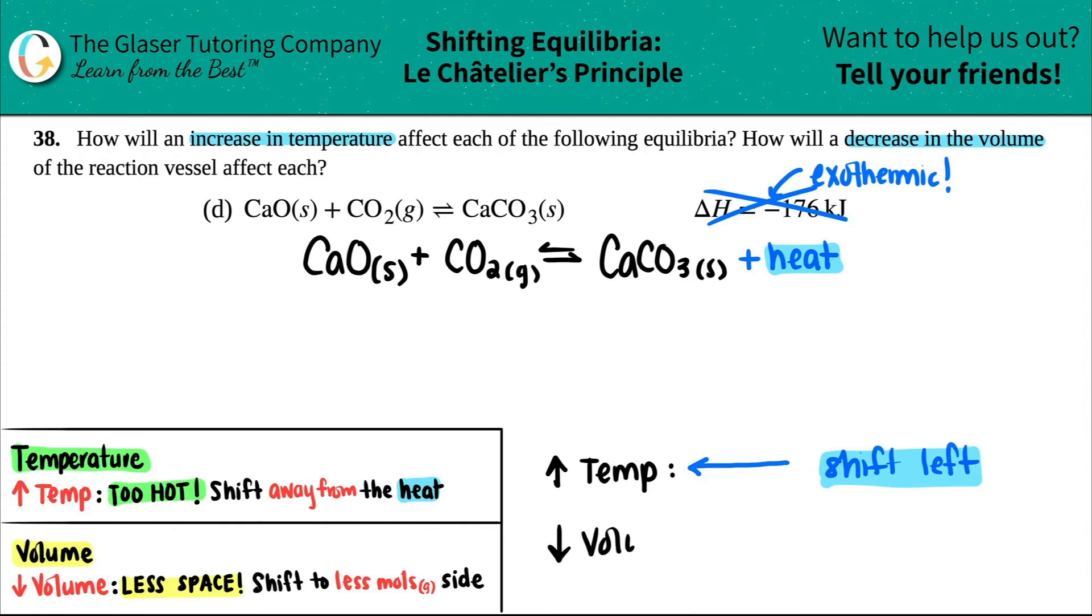Volume is just talking about the space—literally the space that these molecules are existing in inside this reaction vessel. If you're lowering the volume you have less space, so it makes sense that you would want to be with the side that has less moles. Literally, less moles means less space you need. We just have to calculate the moles in this equation, but remember it's only the moles of gas that we care about.